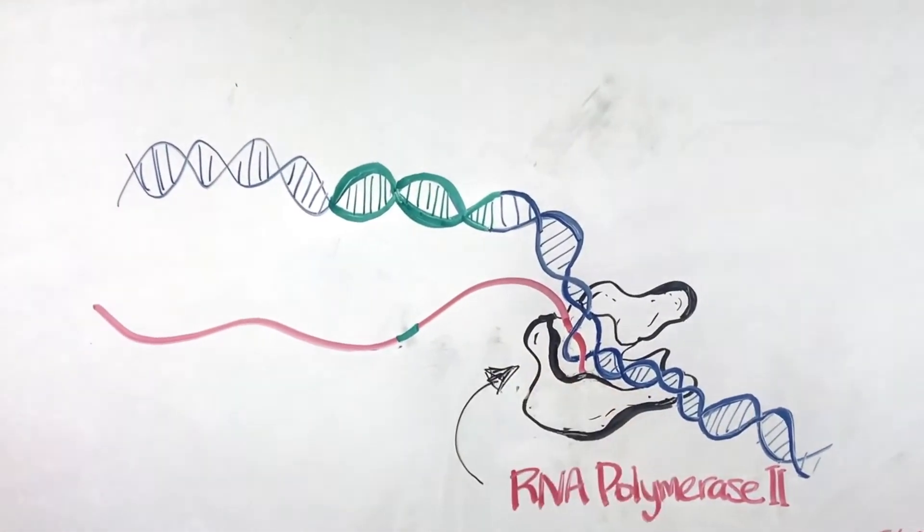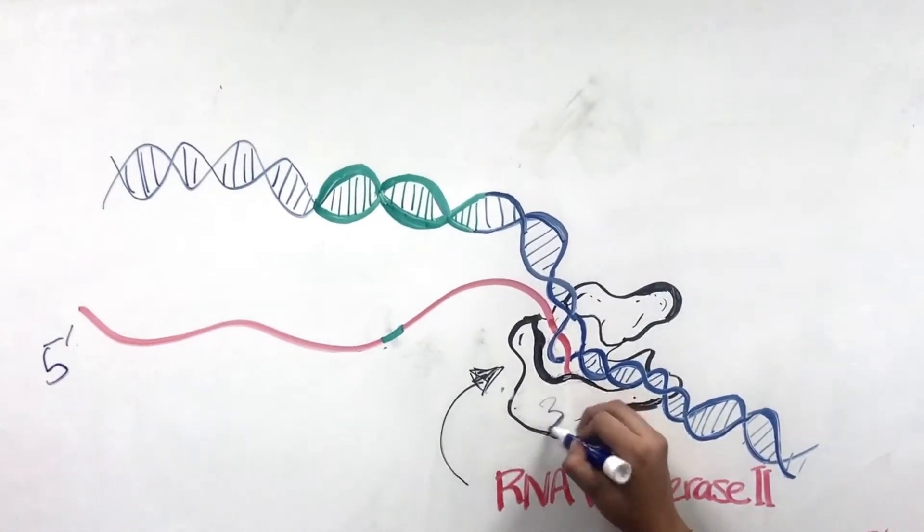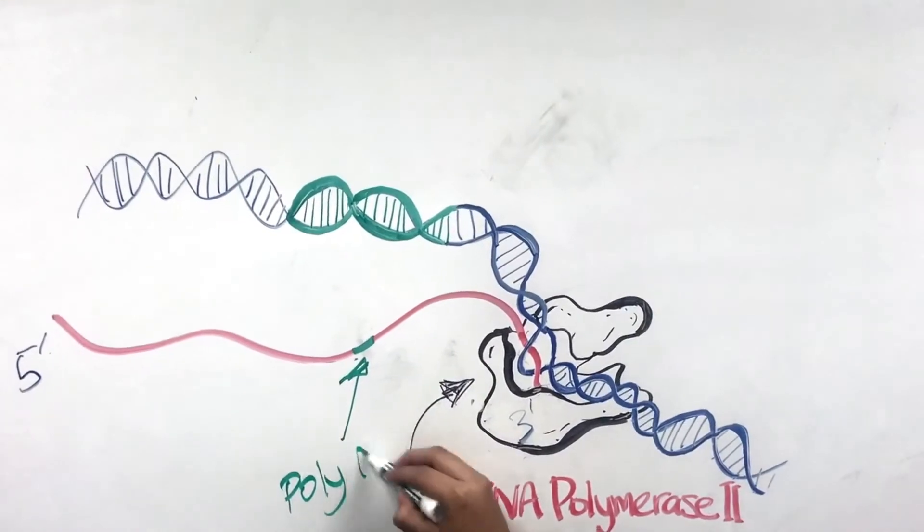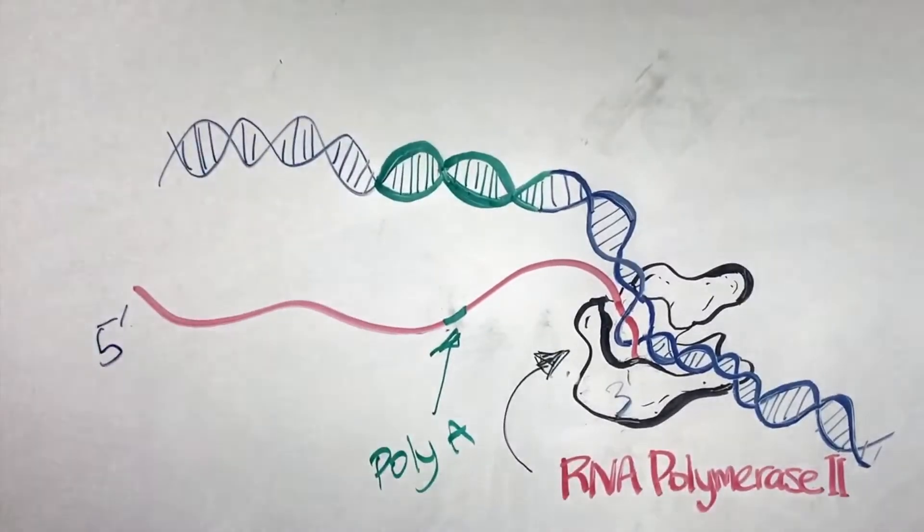RNA polymerase 2 transcribes an mRNA from the DNA strand in a 5' to 3' direction, until it gets the polyadenylation or poly-A signal,